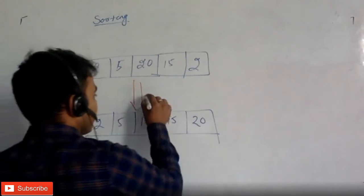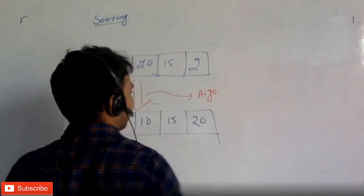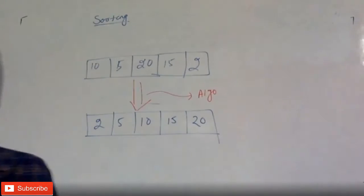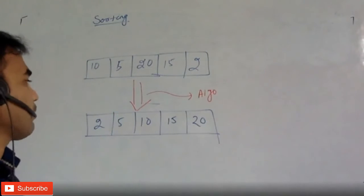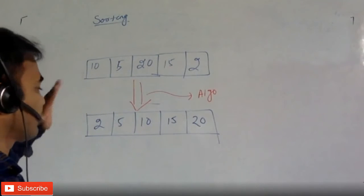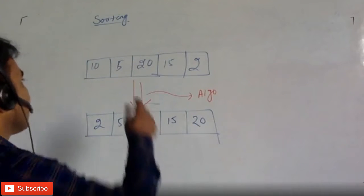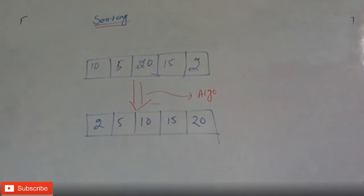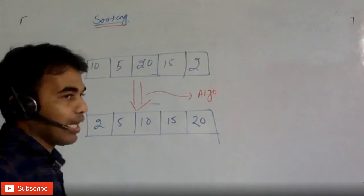Whatever algorithm you apply, there are very many varieties of algorithms available. But the objective of all the algorithms is the same — we want to sort a given array. We want to sort any given input in some form, either ascending or descending. That is the objective of sorting.